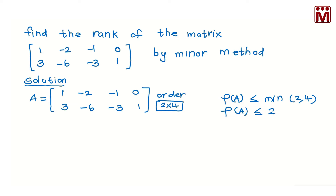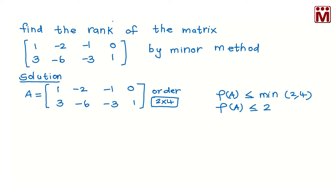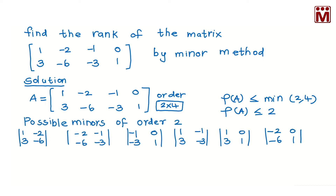Now, rank of A is less than or equal to 2. We need to check minors of order 2. The determinant value of the first minor is 0, and another minor also gives determinant value 0.